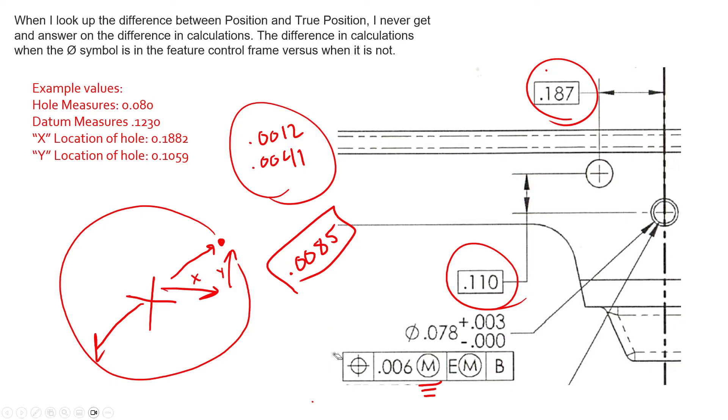So let's go ahead and assess that bonus tolerance. Now we calculate bonus tolerance for this specific part in this specific feature based on the hole diameter. So we are given the example measurement of the hole, which is measured at 0.080.